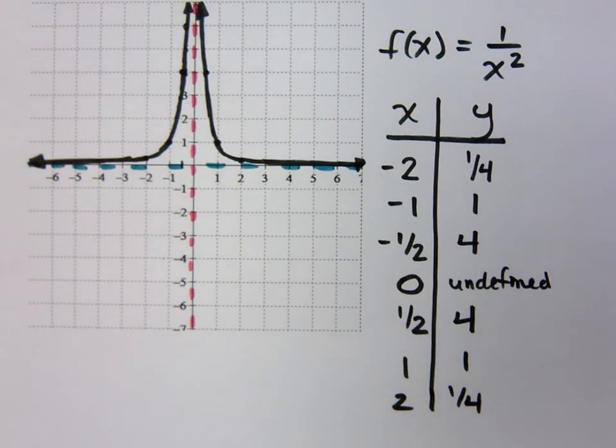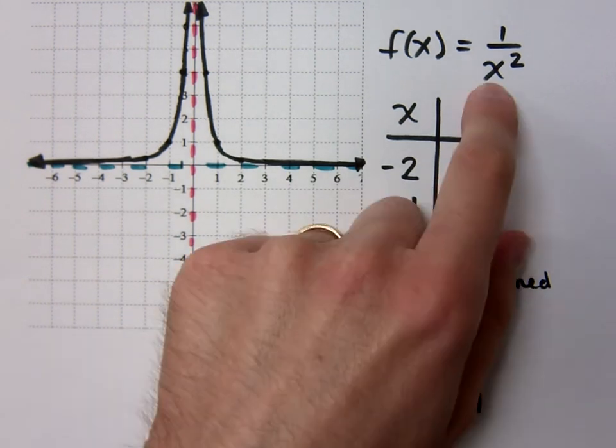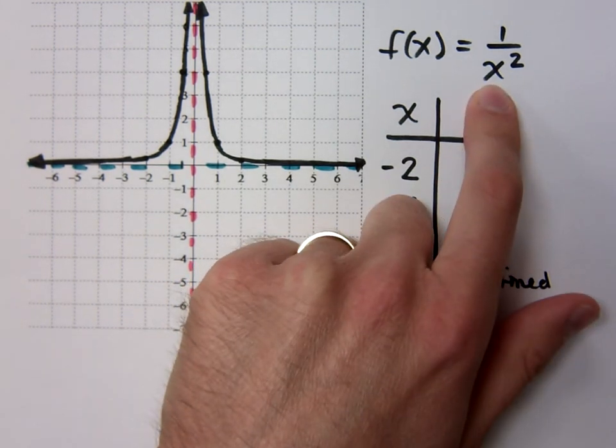Now, what we said about horizontal asymptotes, you can cross those. But what they mean is that as you go out to positive or negative infinity, you start to get closer and closer and closer to that. You can cross horizontal asymptotes. This guy doesn't cross his horizontal asymptote, though.